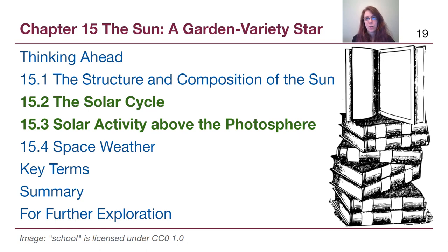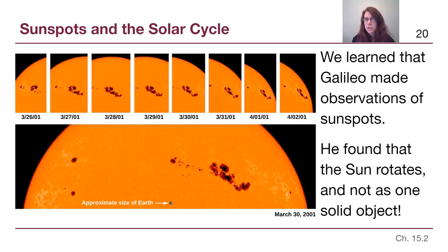Welcome back to chapter 15, where we are going to talk about the solar cycle — the fact that the sun is not always at the same level of activity — and the different observations that we have made to confirm the ideas that scientists put forth. This actually goes back to chapter 2 when we talked about Galileo and the telescope he built in the 1600s and all of the different observations he made, because one of those observations was that the sun has what are called sunspots.